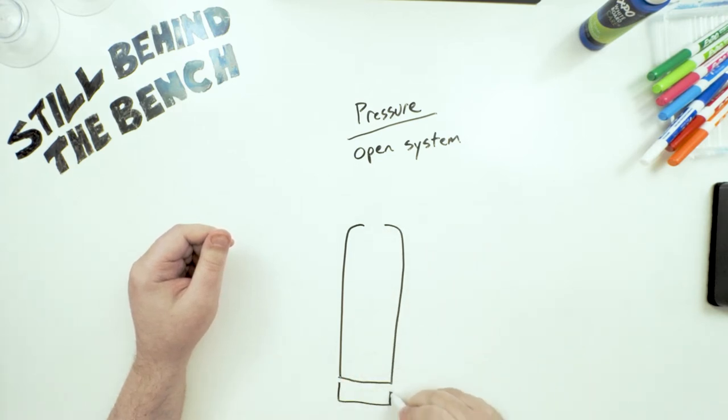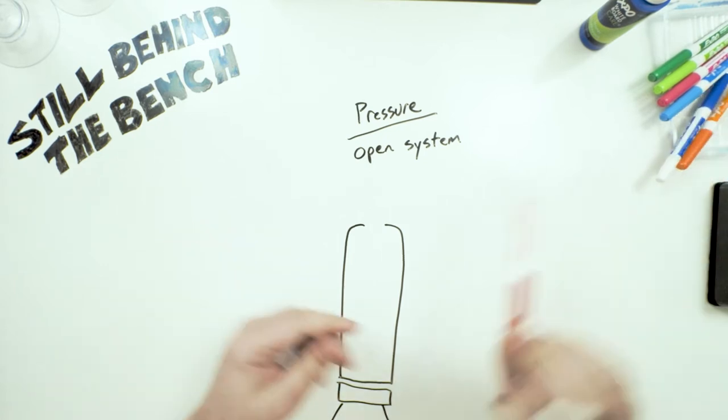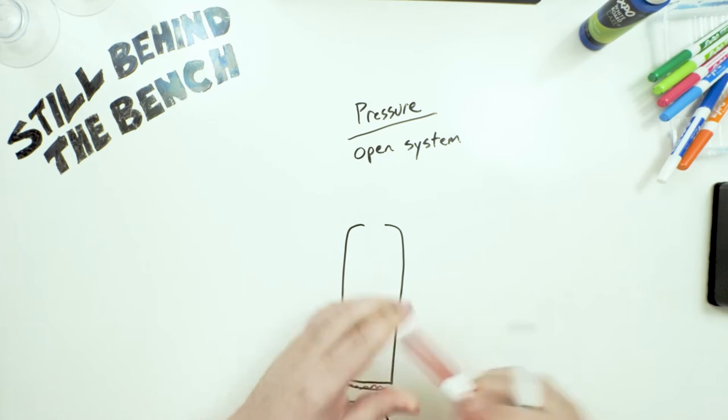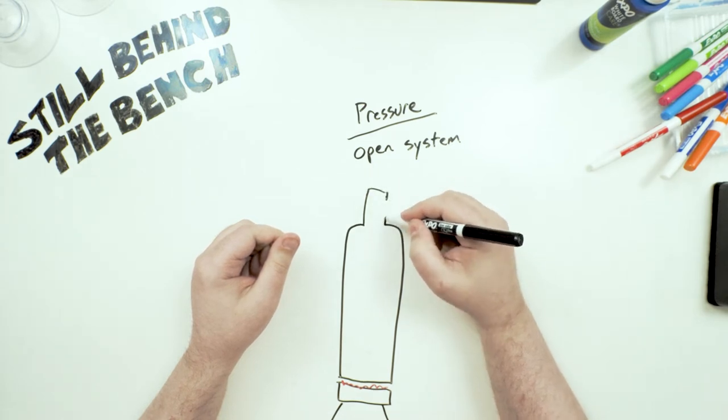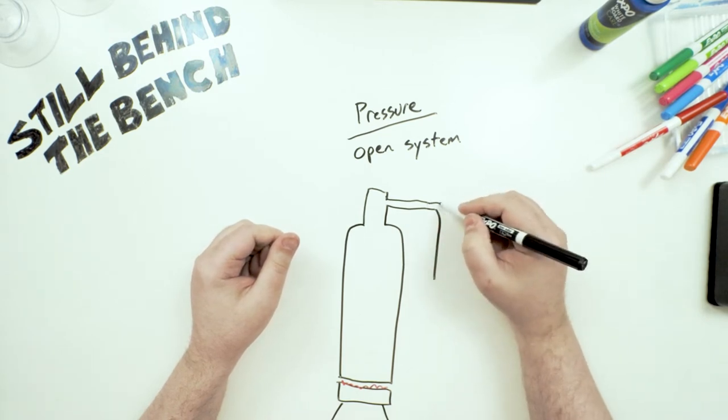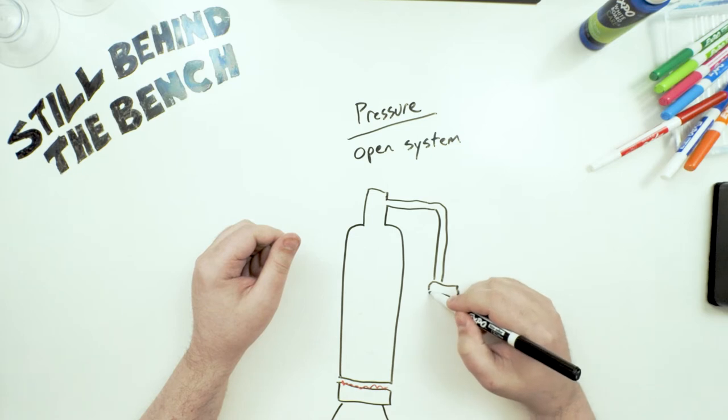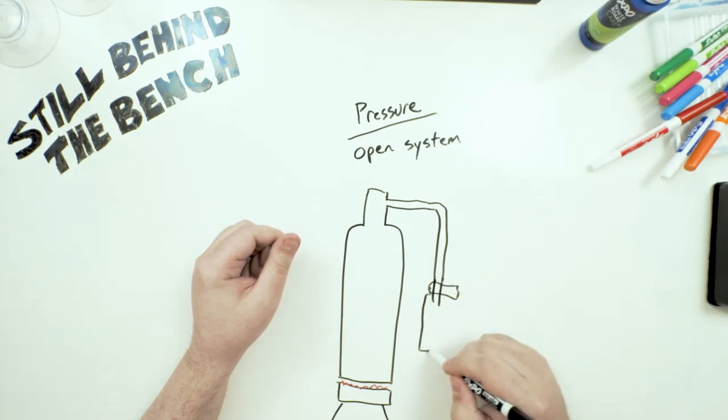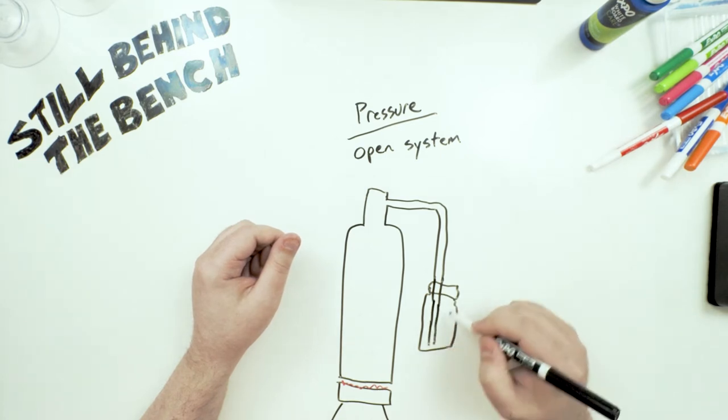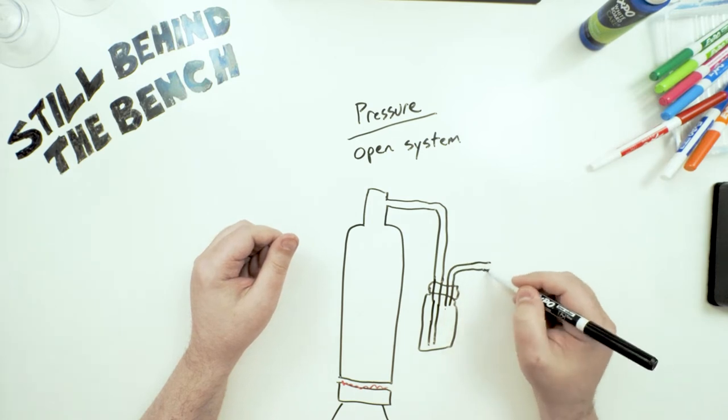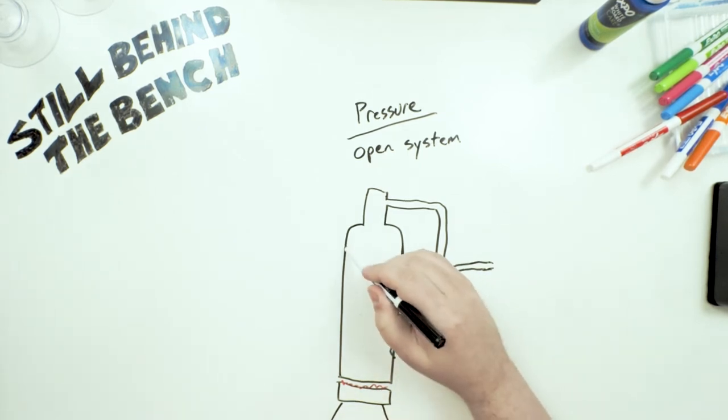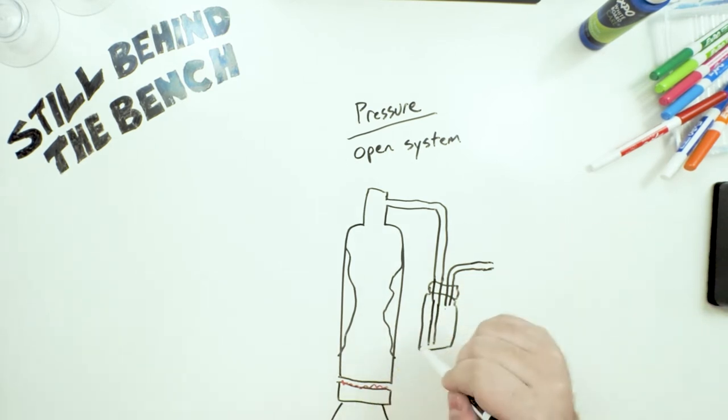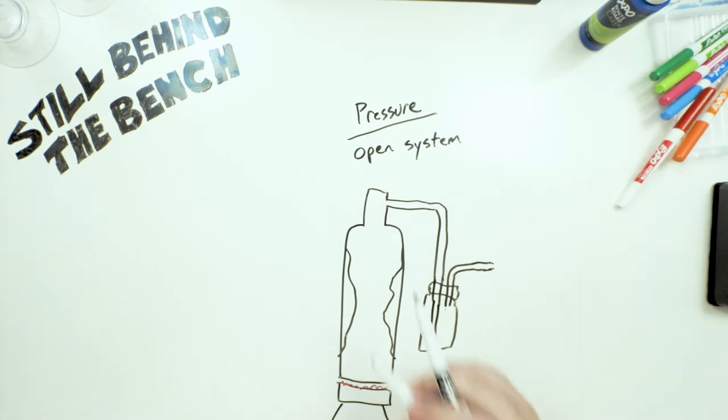So he had this large still on top of a gas burner, and then it goes down to a thumper, and this goes off to his condenser or worm or whatever he has. But yeah, this thing was all crumpled in like this after he was done.